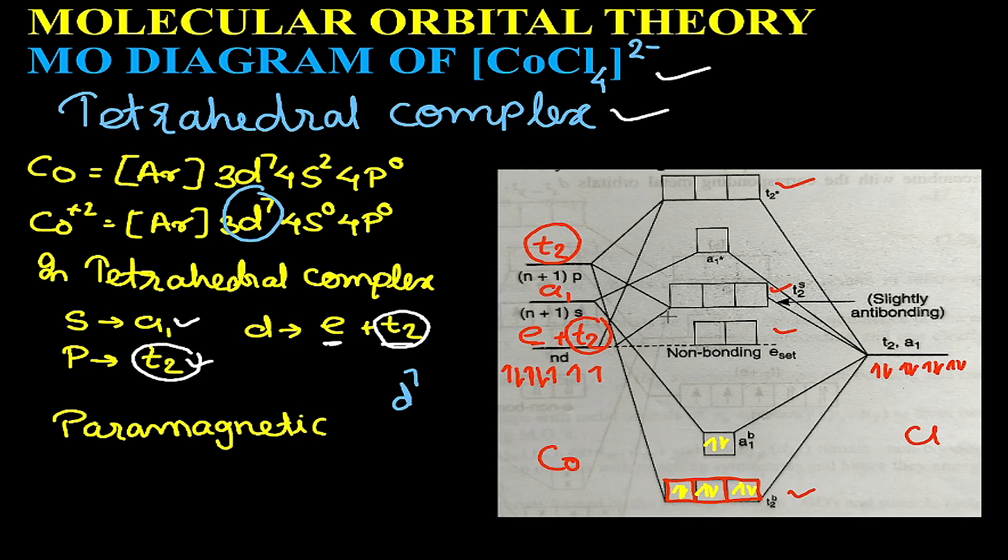These seven electrons of the cobalt will be filled in this particular manner: one electron will go here, then second, third, fourth, fifth electron, and then the sixth and seventh electrons will be paired in E orbital. As a result, E orbital will have four electrons and T2 orbital will have three electrons.